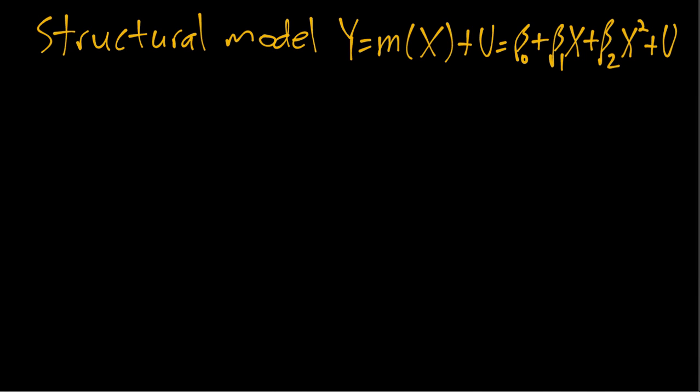This video is about structural models that are nonlinear in variables. For example, here we have a quadratic model so it is nonlinear in X. And as in the linear case, by structural we mean this model has a causal meaning and similarly this error term U has a causal meaning.